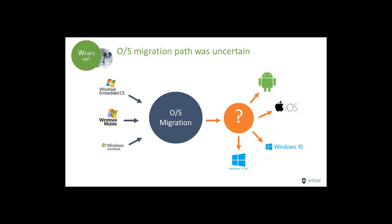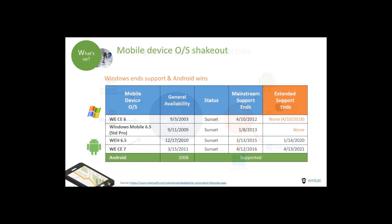Rugged mobile device manufacturers had a choice. iOS being a closed platform was not an option for a purpose-built rugged data collection device. The market could either continue with Windows Embedded CE or invest in Android devices. In 2015 there was time — many considered Android immature from an enterprise perspective. In 2019, Android has truly reached maturity and the clock is ticking. Extended support has already ended for CE 6, and we're only six months away from Windows Embedded 6.5 end of extended support.